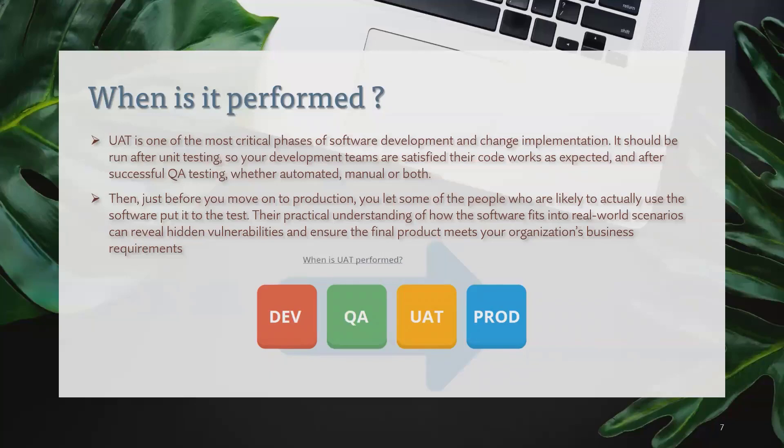When do we need UAT to be done? Generally, when the process hasn't started, the UAT team begins working on the different stages discussed earlier. This is a very critical phase of software development. It should run after unit testing — once developers are satisfied their code works as expected — and after successful QA testing. Once the QA team provides the go-ahead, the UAT team starts executing test cases and verifies each case based on business requirements.